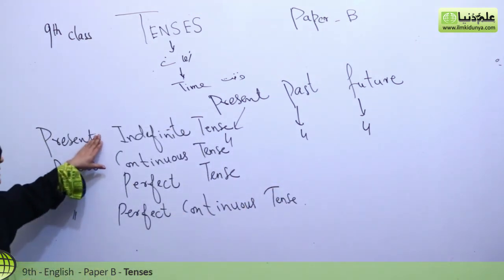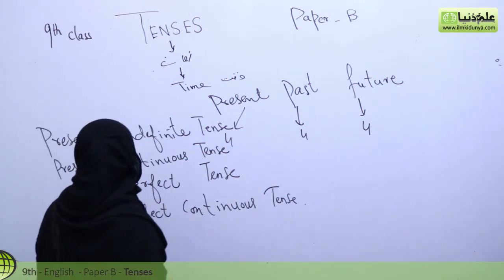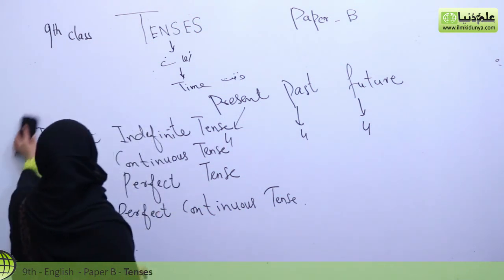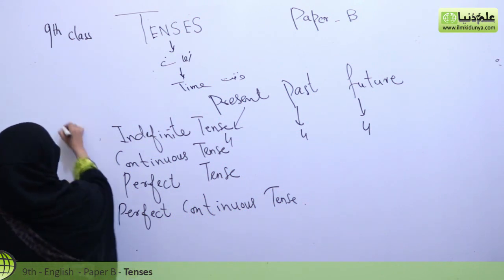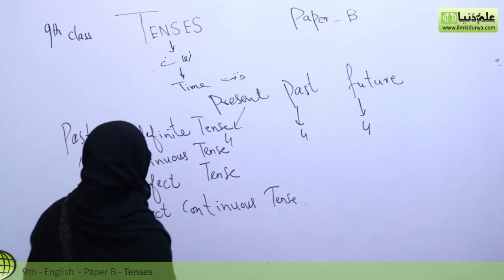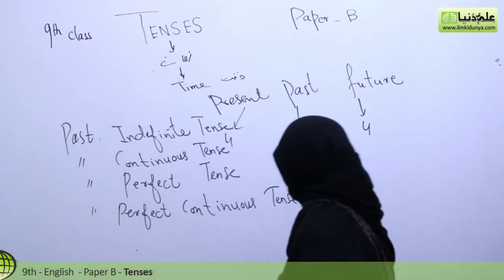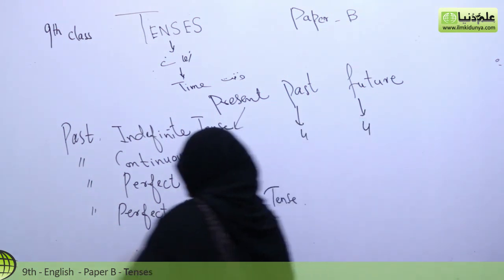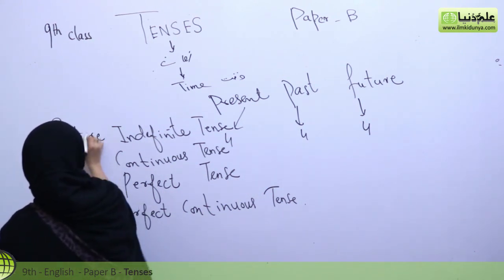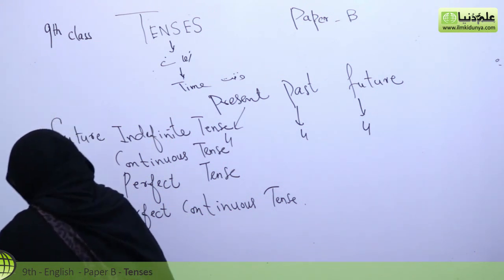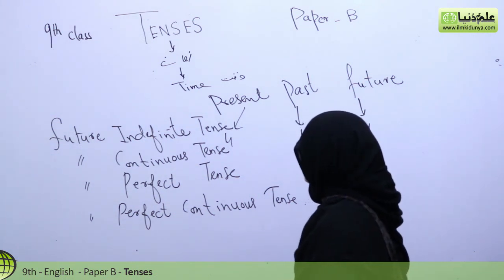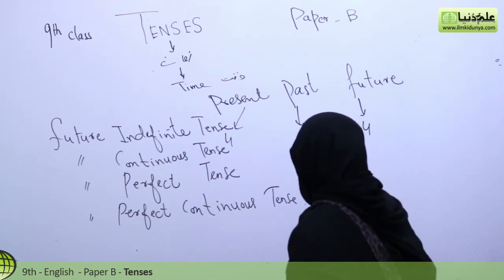These are the four types of present tense. Now, similarly, past tense also has four types: past indefinite, past continuous, past perfect, and past perfect continuous. And future tense has: future indefinite, future continuous, future perfect, and future perfect continuous tense.